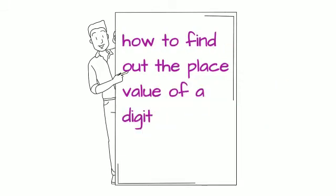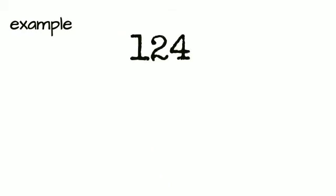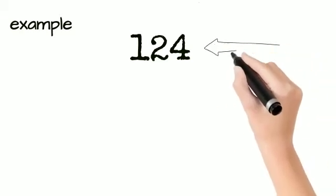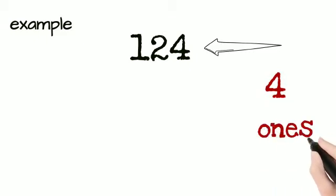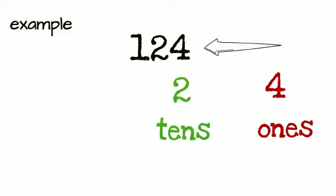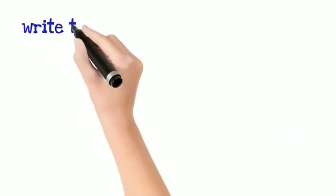How to find out the place value of a digit? Let's look at one number and see where the place values are. Our first example — the number is 124. Starting from the left side, the last digit is 4. 4 is in the ones place. The next digit is 2, and 2 is in the tens place. And the last number is 1 — 1 is in the hundreds place. This is how you find out the place value of a digit.